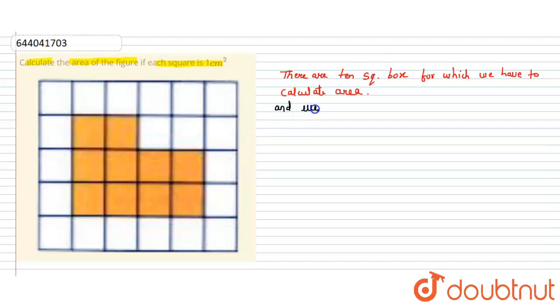And we know that each square area, we write here each square area equal to 1 cm². So for ten square boxes, the area equal to 10 times of 1 cm², so it means it is 10 cm². So 10 cm² is the area of the given shaded figure. Thank you.